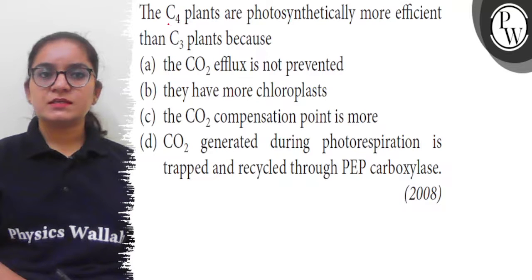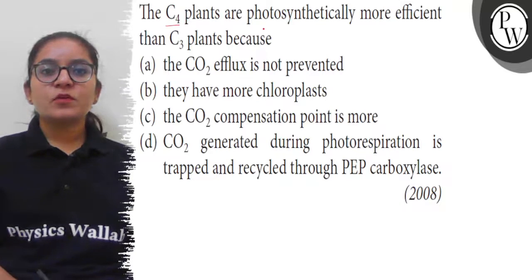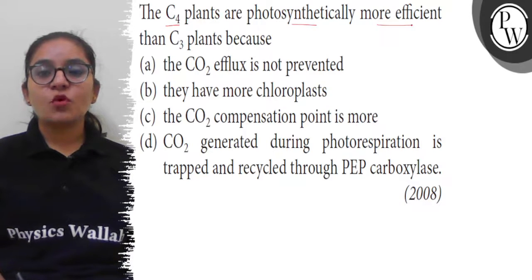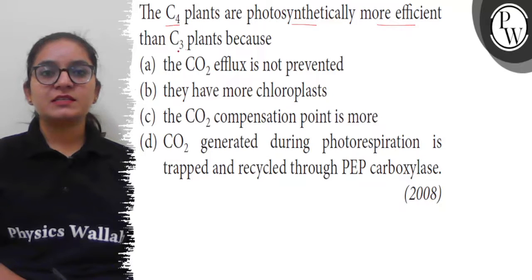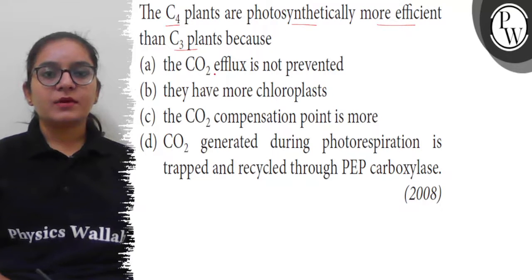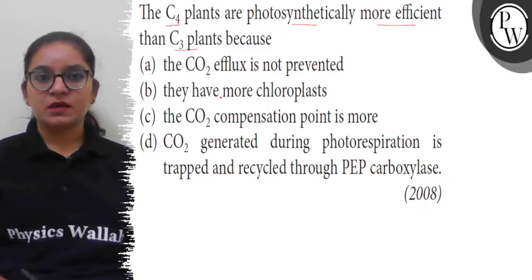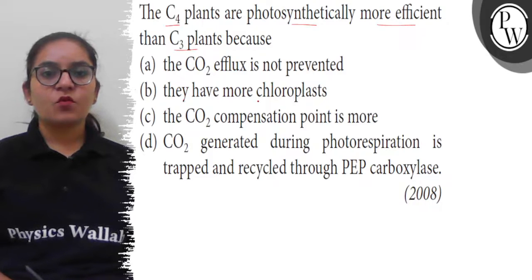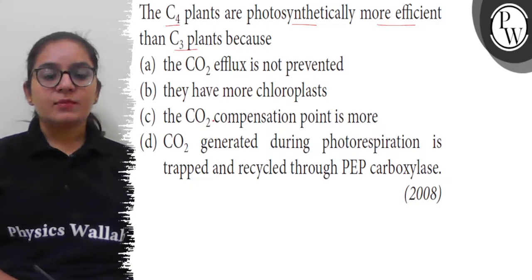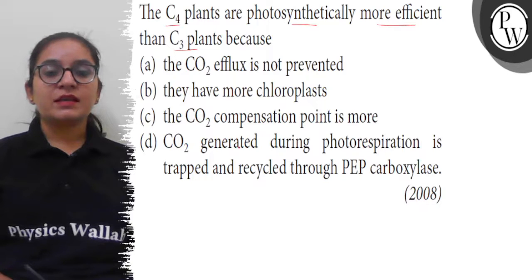Hello students. The question is: C4 plants are photosynthetically more efficient than C3 plants because — (a) their carbon dioxide efflux is not prevented, (b) they have more chloroplasts, (c) carbon dioxide compensation is more, (d) the carbon dioxide generated during photorespiration is trapped and recycled through phosphoenolpyruvate carboxylase.